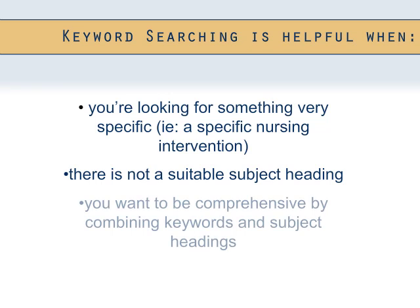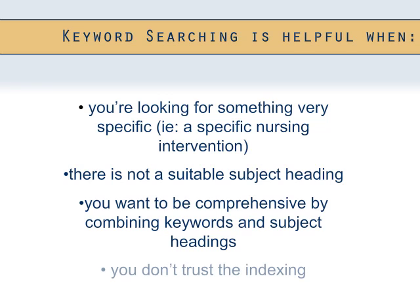When you are trying to be extremely comprehensive in your search, you can use keywords as well as subject headings to make sure you are not missing anything. There is always a chance that an indexer has missed a certain keyword while going through articles. When running keyword searches, it is important to brainstorm as many related keywords as possible so you can be as thorough as possible in your search.